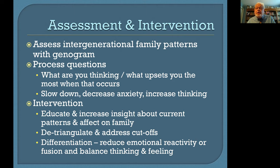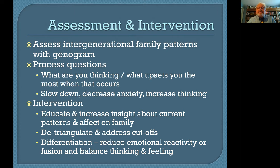Intervention can also include detriangulating and addressing cutoffs. In Bowen's model, cutoffs are occurring in your family of origin, suggesting you haven't resolved the issues of either fusion or distance that happened in order to cope with family patterns. Bowen encourages people to return and talk to members of their family of origin in order to try and resolve some of this. Bowen's model also focuses on helping people differentiate — reducing emotional reactivity or fusion and balancing thinking and feeling.